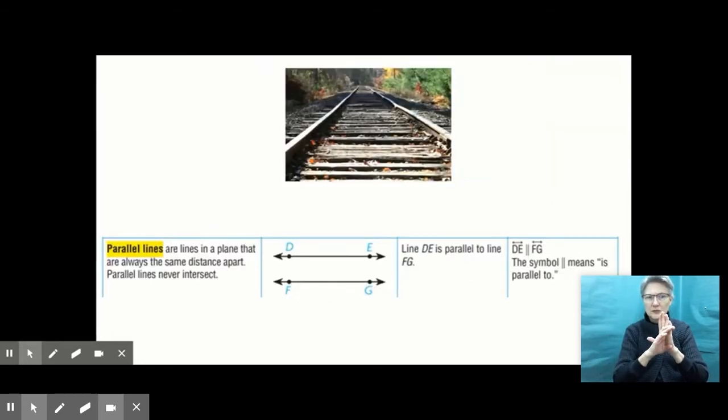Here back to my railroad tracks. This was a real life example of parallel lines. Parallel lines are lines in a plane that are always the same distance apart. Parallel lines never intersect. Sometimes you'll see a picture of some lines that look like they're not intersecting or touching, but you have to think about if those lines continued on forever, would they ever cross paths or intersect?